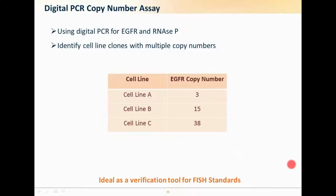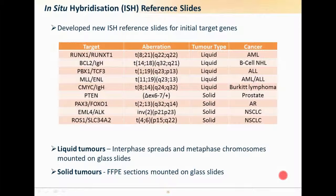Digital PCR also allows copy number analysis. For an ongoing EGFR project, we've been able to identify three different cell lines with varying numbers of EGFR copies. This is a very useful tool prior to applying them as FISH standards, because if you can define what's happening at the genetic level using non-FISH methods, it gives you great confidence that when you set things up with FISH, what you're seeing is exactly what you should be seeing.